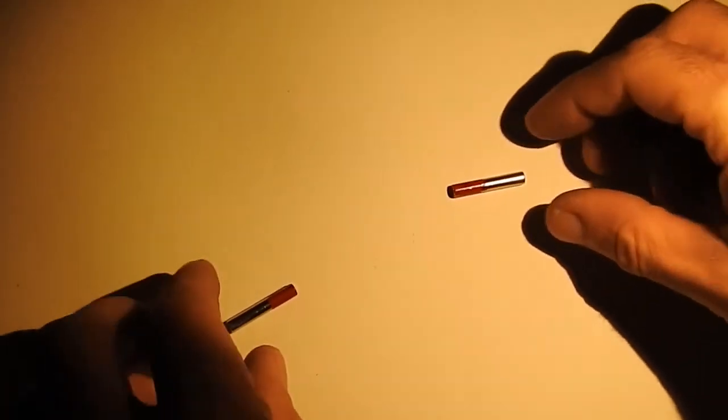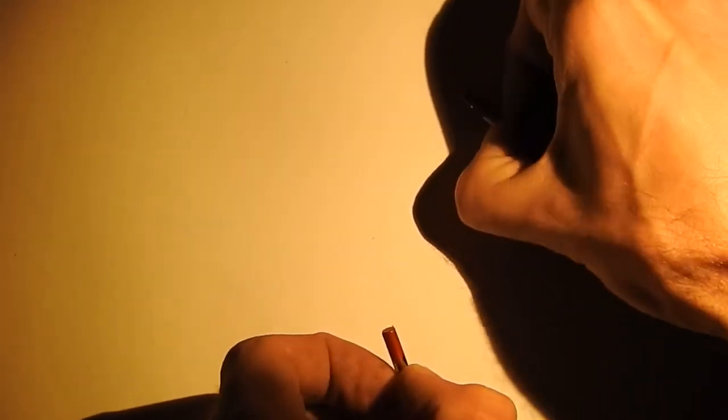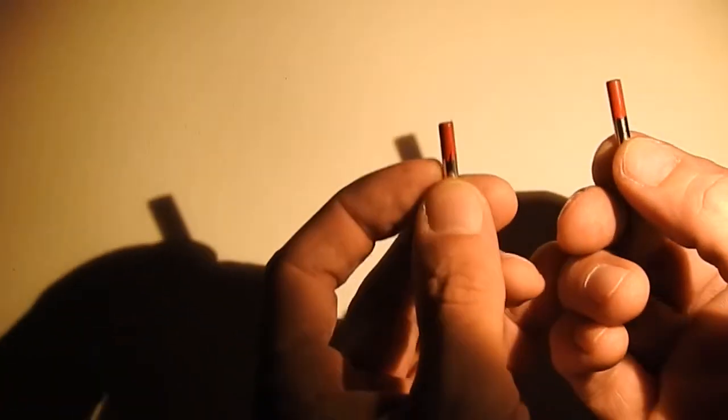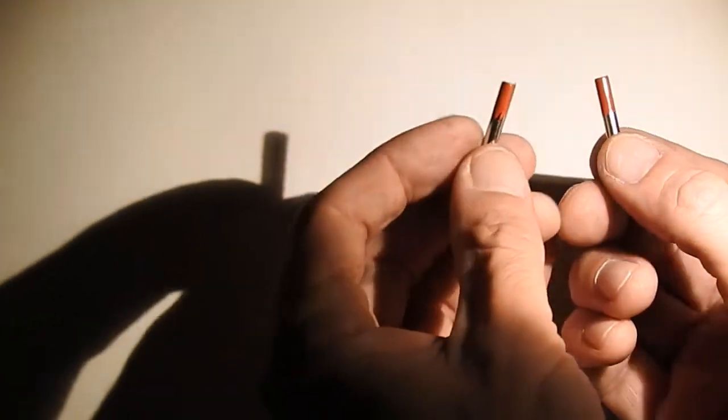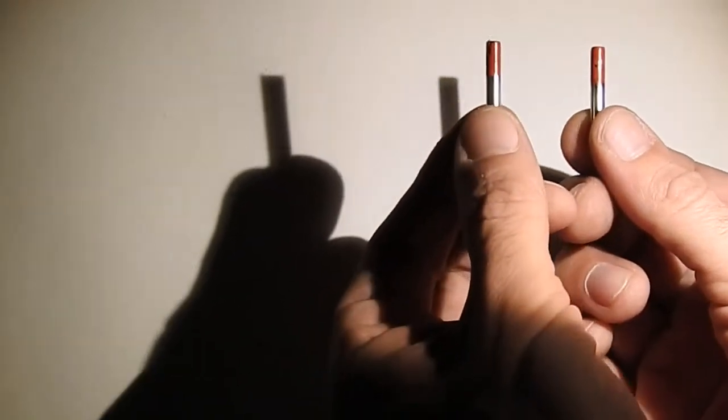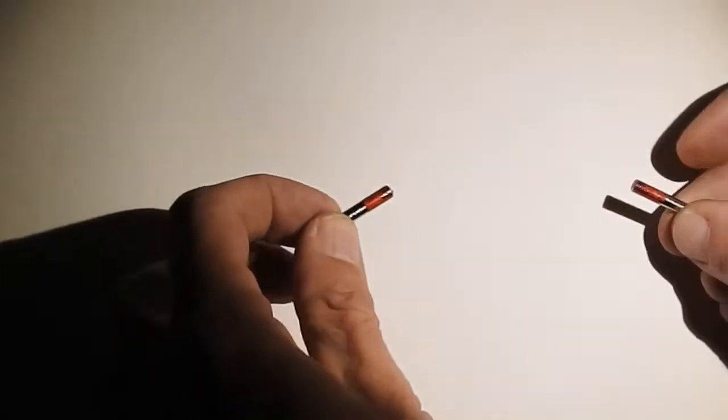Instead of trying to tell you what he means, I will show you with a few demonstrations. First, we will take a look at two coherent objects and how they interact with each other. Here we have two cylinder magnets with the north poles of the magnets painted red.